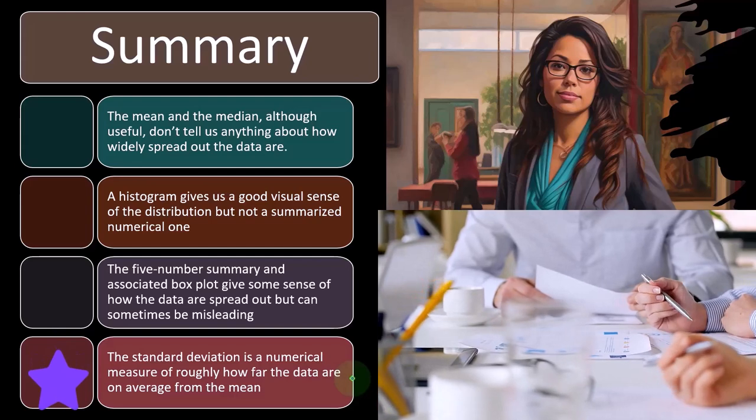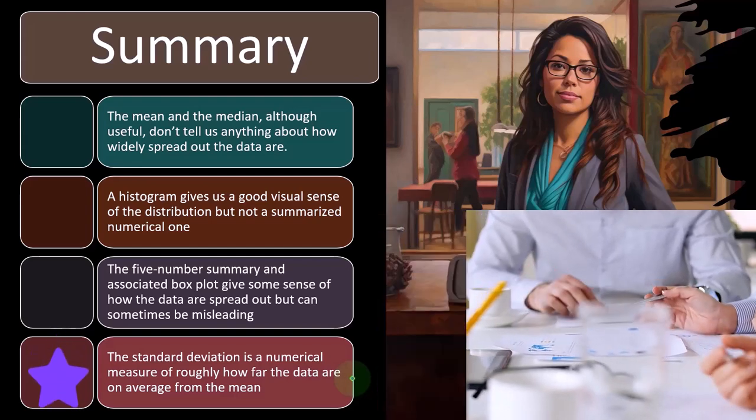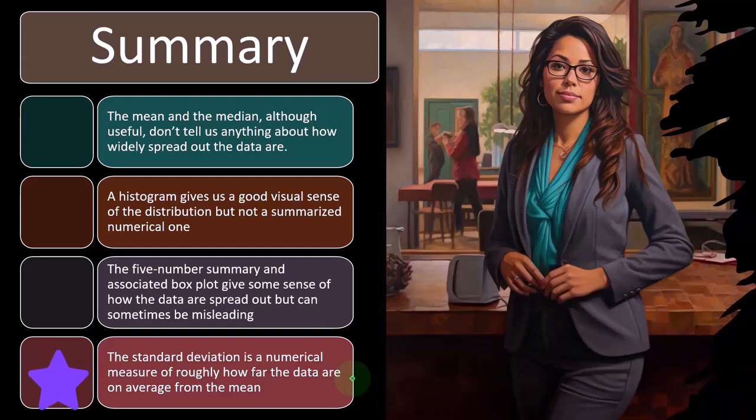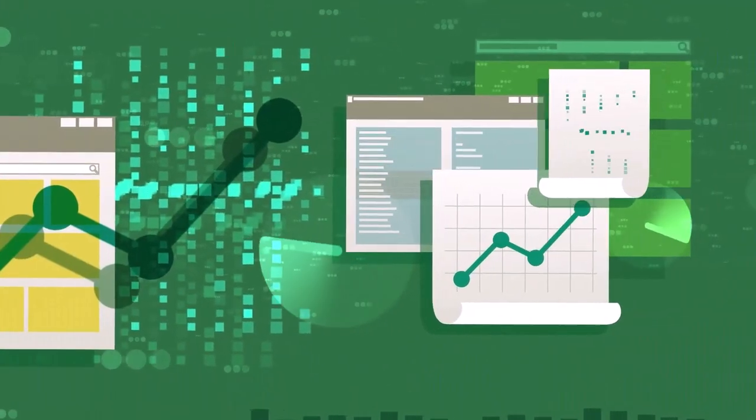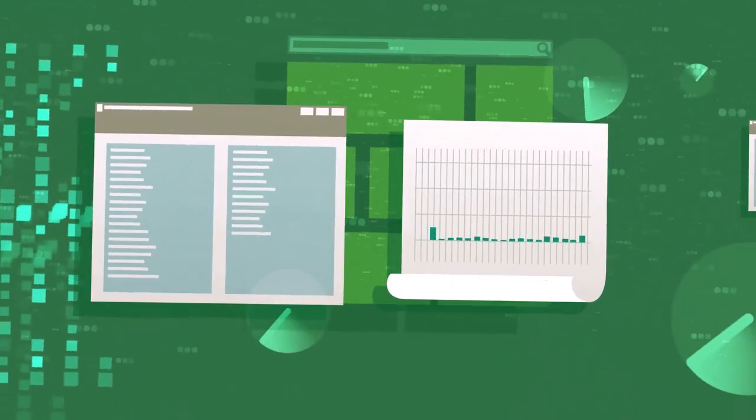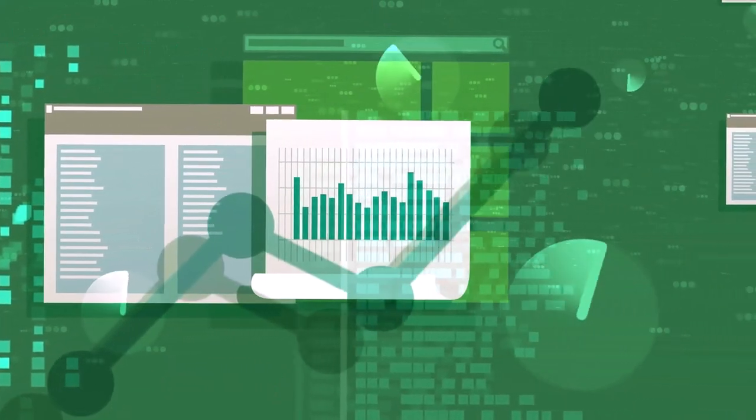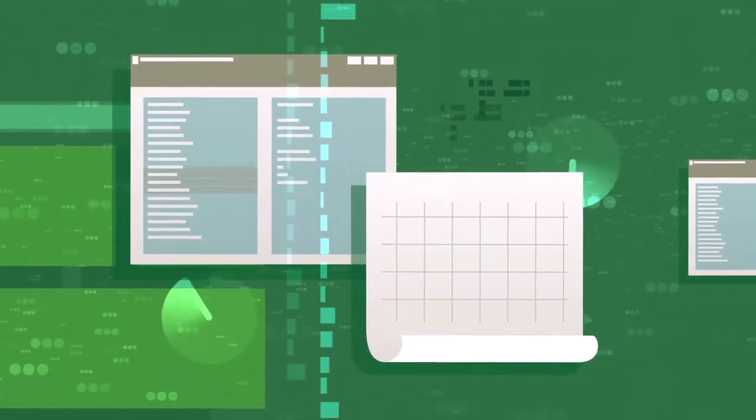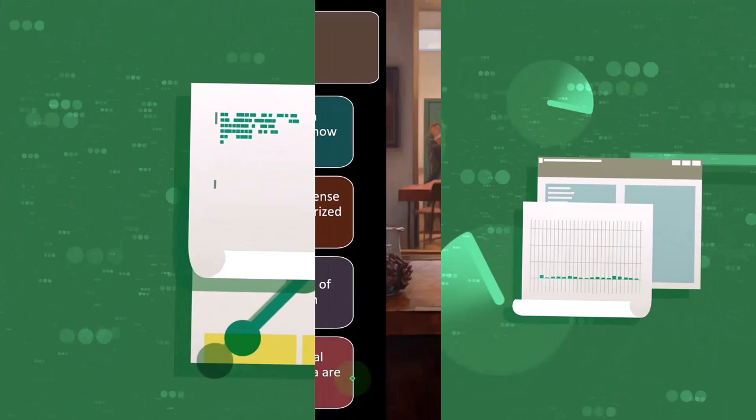So the standard deviation is a numerical measure of roughly how far the data are on average from the mean. So when we look at that standard deviation, remember, that's kind of the idea of it. You've got the middle point, the mean, the focal point, if you're looking at the histogram, and you're trying to think about the average distance from that focal point with the standard deviation calculation.